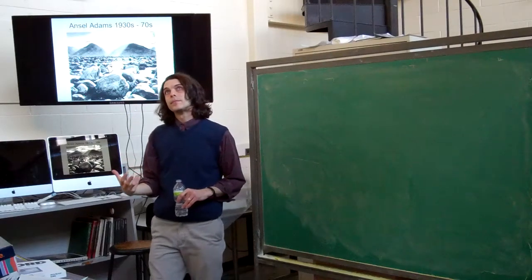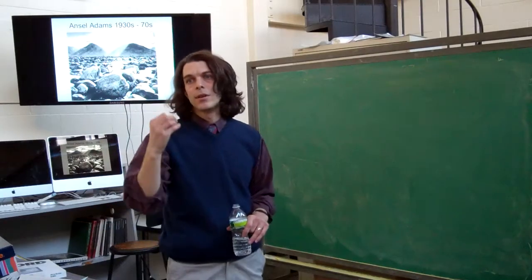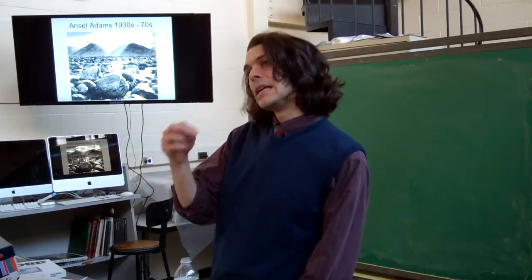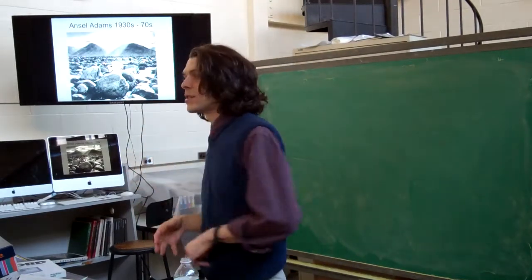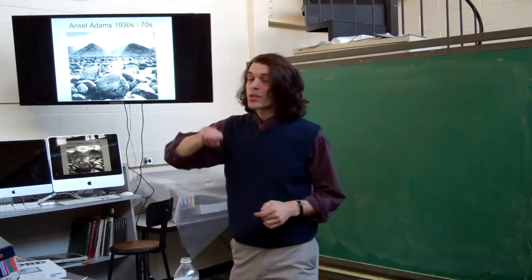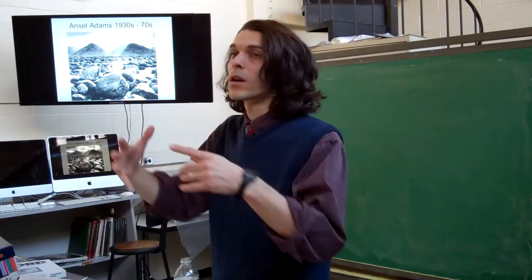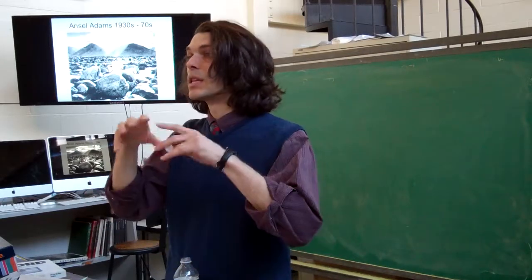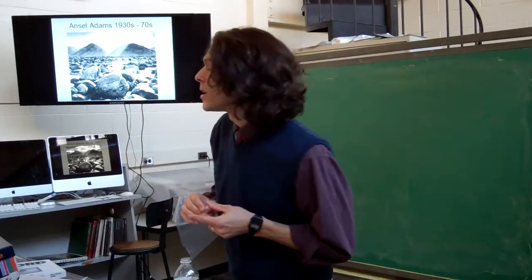So modernism. Modernism, very much about the ideas of being true to the medium. What is the innate nature of photography? It's about rendering things crisply. It's about having this sort of long range. And modernism also is an idealistic place to work from. People who are modernist artists believe that their art is going to change the world for the better.